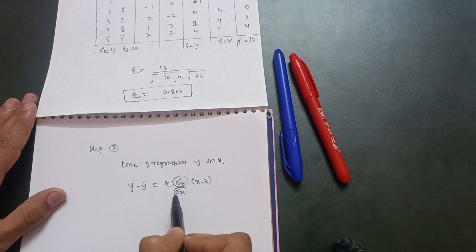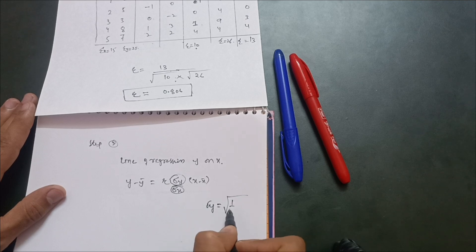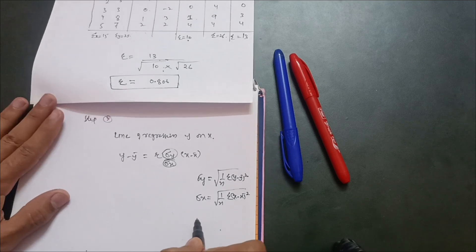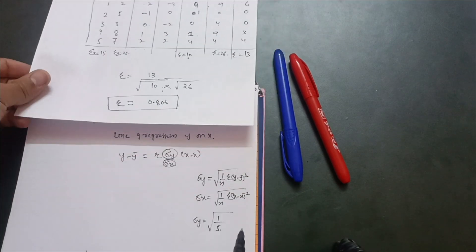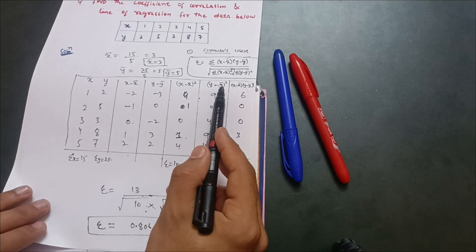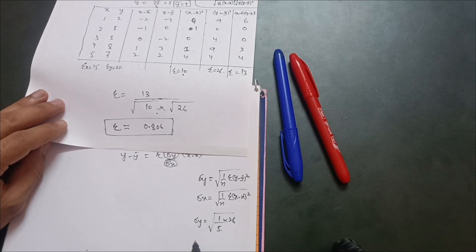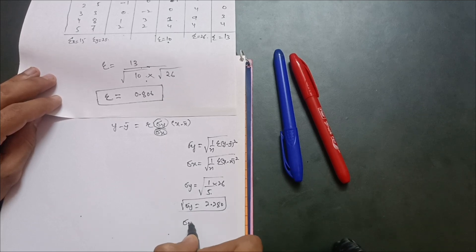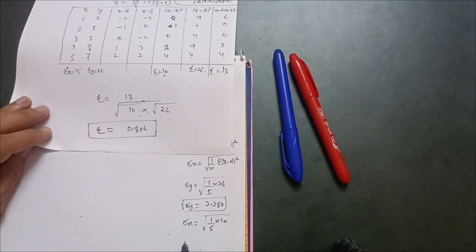To use this formula we need σy and σx. σy = √(1/n × Σ(y minus ȳ)²) = √(26/5) ≈ 2.280. σx = √(1/n × Σ(x minus x̄)²) = √(10/5) = √2 ≈ 1.414.